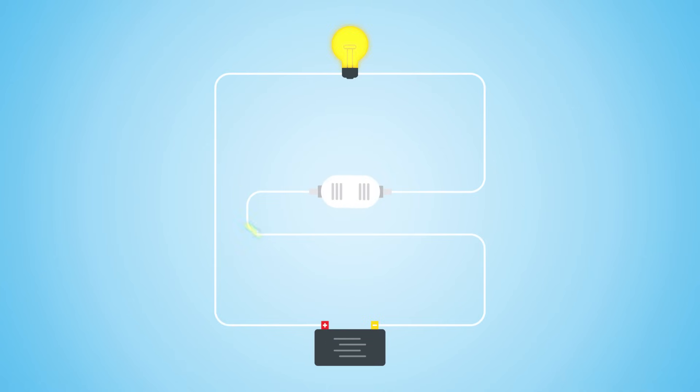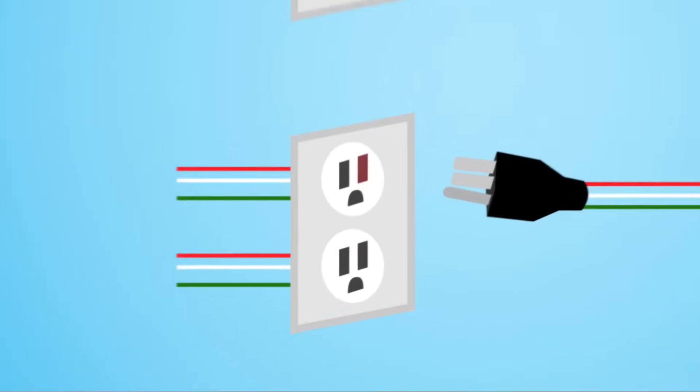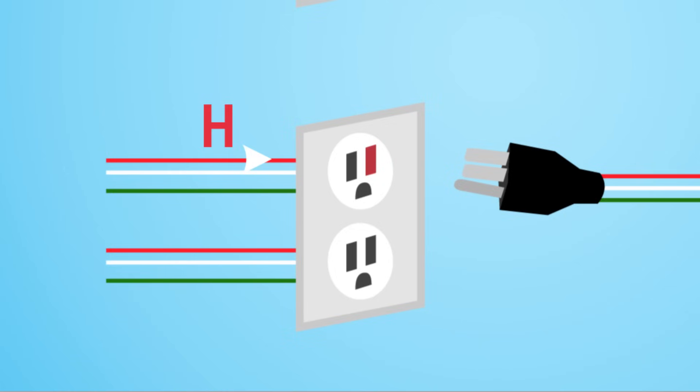Electricity must flow in an uninterrupted circuit. Take a look at your home outlets, for instance. The right, smaller slot is for the hot wire. This is where the electricity comes from. The left, wider slot is for the neutral wire.